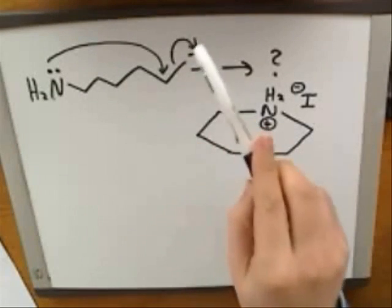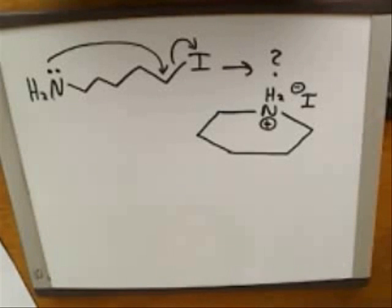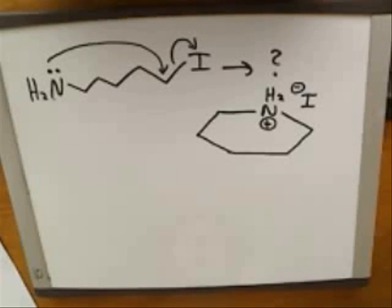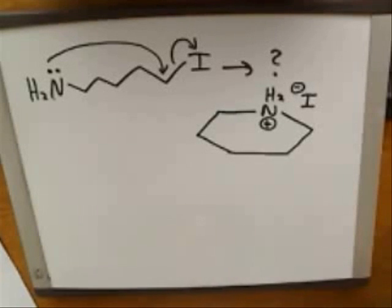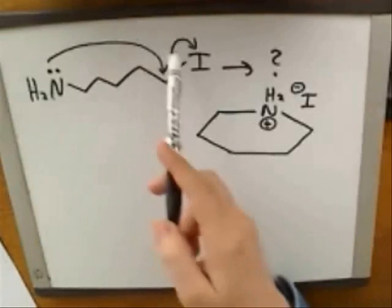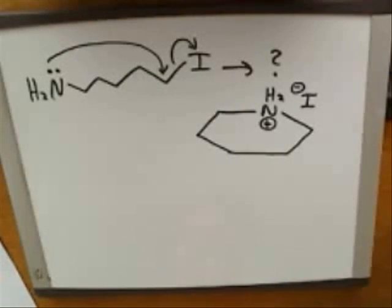How would we know that these two arrows are reasonable in this case? That's a very important question — but I'm not going to cover it in this series. This series is not about figuring out which electron-pushing arrows to draw. I'm not going to tell you why these are reasonable arrows; I'm just going to give you the arrows, and we'll discuss how to get the right product once you already have them.